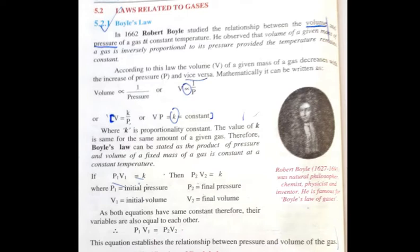Meaning if we have the inverse relation, the volume of a given mass of gas is inversely proportional to its pressure, provided the temperature remains constant.